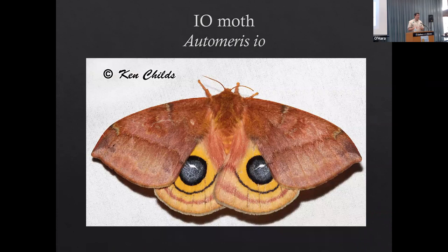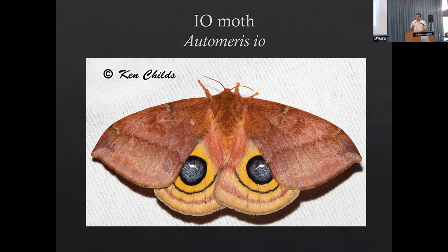Then we have our lovely Io moth. You can see why it's called the Io moth - it has those fake eyes on the hind wings. Why would it have those? If I'm a hungry bird and I come up to something that looks pretty delicious, but it stares back at me with eyes bigger than my head, I'm going to fly off. This is a great defensive mechanism that these Io moths have.